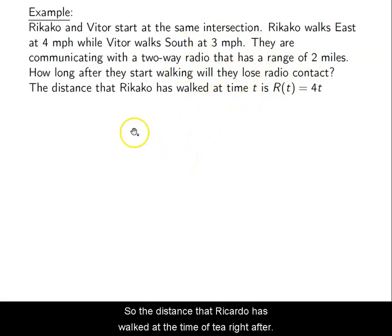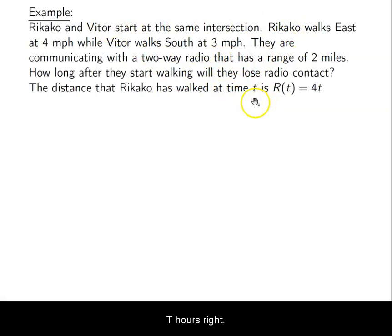Their distance between them can be symbolized with a straight line. So the distance that Rikako has walked at the time T, after T hours, is given by R(t) = 4t. If she walks for one hour, she's gone four miles. If she walks for half an hour, she's gone two miles. We'll give it a capital R because her name starts with an R.